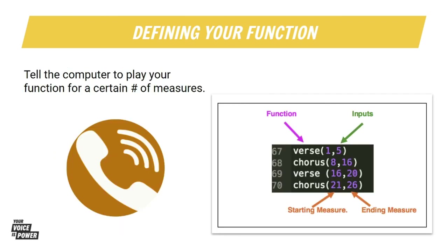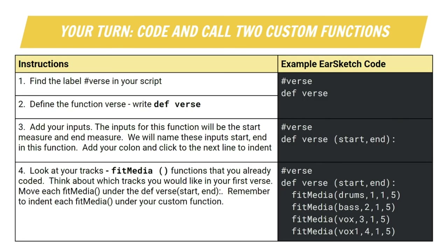After you section your song, you will call those custom functions. What does it mean to call your custom function? This is when you tell the computer to play the verse, chorus, intro, bridge, or transition on specific measures. If you want your verse to play measures one to five, your call will be verse one to five — like the example on line 67. Remember: each verse or chorus plays in multiples of four, and we have been using multiples of eight. Now we are going to get into EarSketch and I am going to walk you through this process.